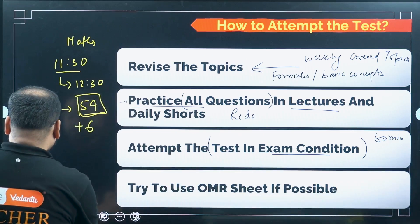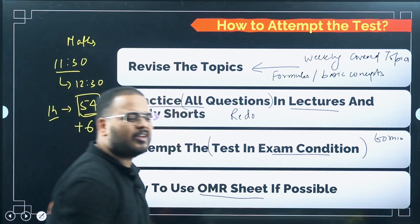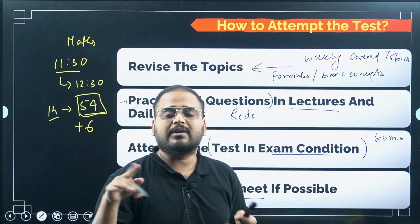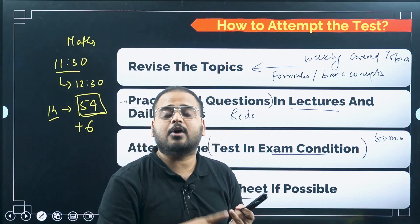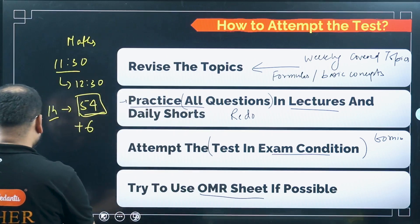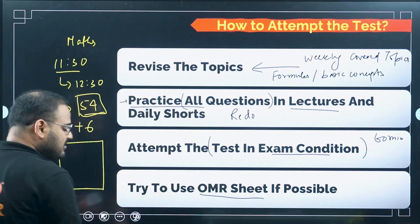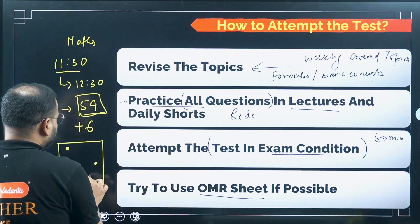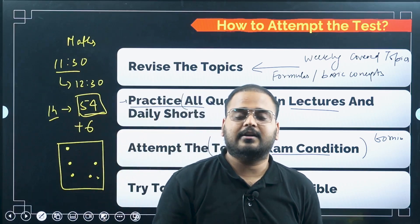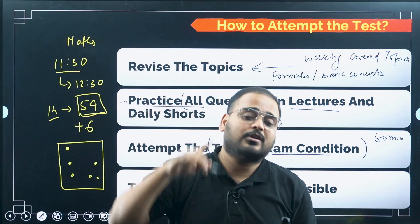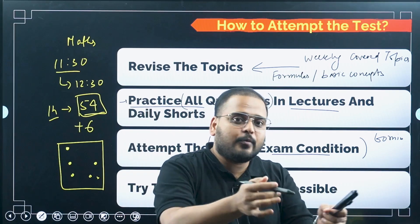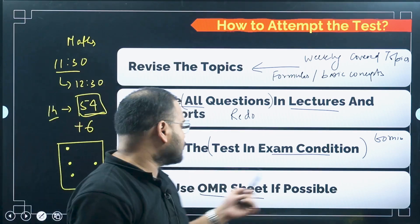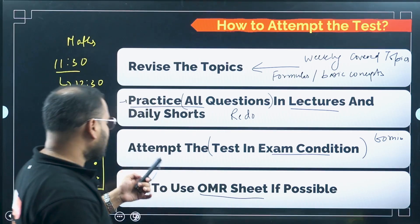Try to make use of OMR sheets. You can find them online for 60 questions, get printouts — multiple printouts to keep. Whenever you are writing for maths, chemistry, bio, physics, use an OMR sheet just like in the actual examination. Why? Because if you don't have practice darkening the circles properly, you lose marks. You'll always have that pressure of 'I need time to do this as well.' Make sure you work on time management and every second counts.